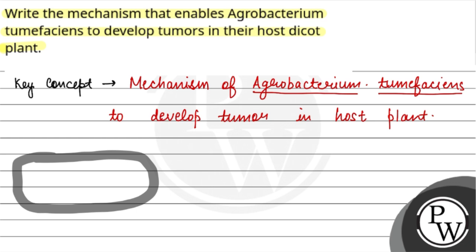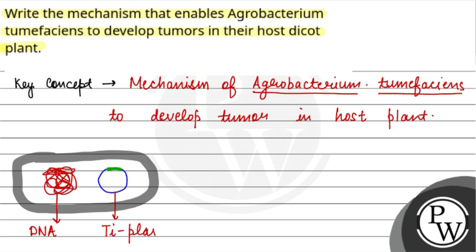Let us see the structure of Agrobacterium tumefaciens. This is the bacteria, and this is the circular DNA of the bacteria, and it has a Ti plasmid which has tumour-inducing genes. This over here is the DNA of the bacteria, and this is the Ti plasmid, or we can say tumour-inducing plasmid. This is how the structure of Agrobacterium tumefaciens looks.